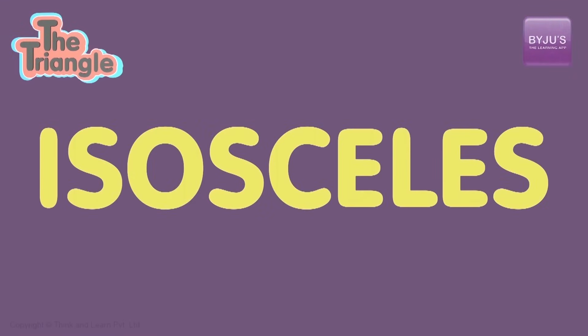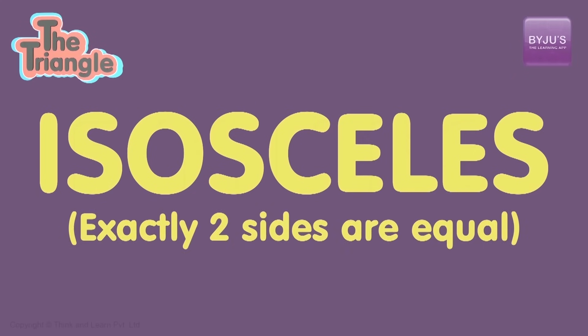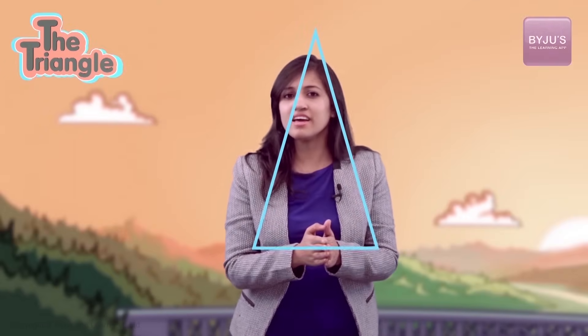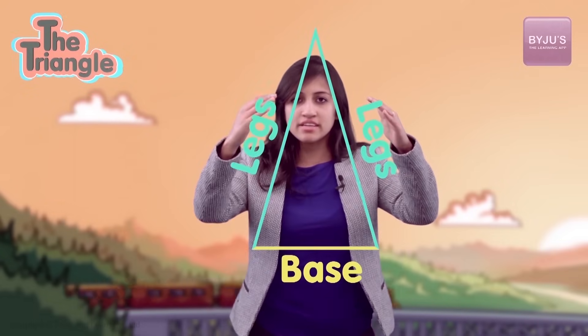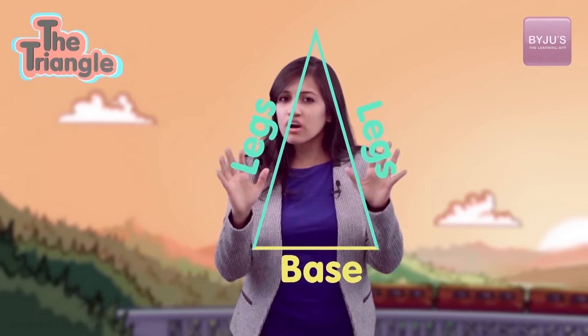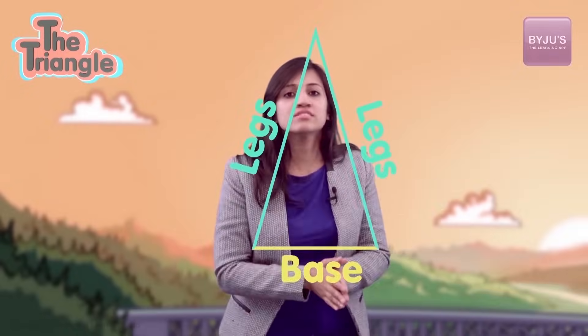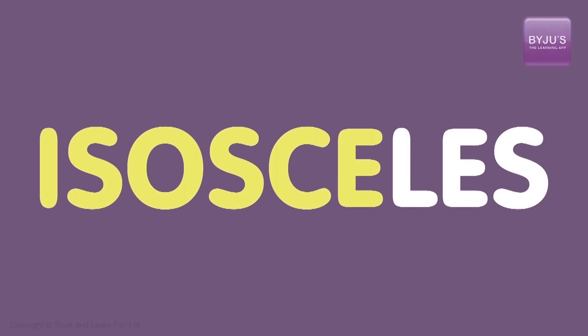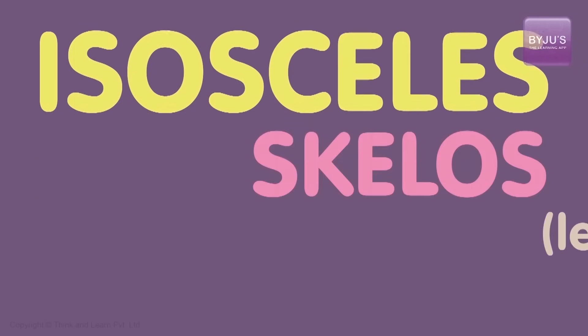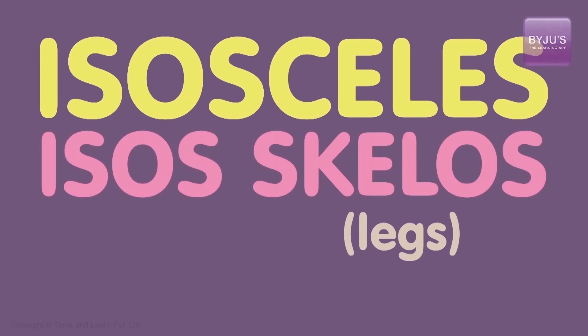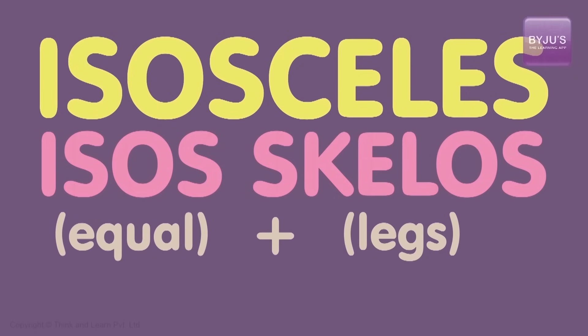They can be equilateral, as we spoke about, or they can be isosceles — which is a very complicated way of saying that exactly two sides are equal. You'd draw it maybe like this. This side is called the base, and these two sides are called the legs. The name isosceles is a mix of 'scelos,' which means leg, and 'isos,' which means equal — so 'equal legs.'